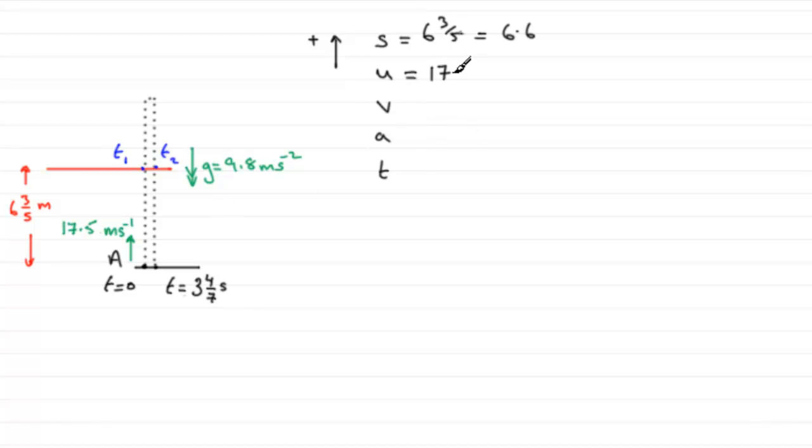v, the final velocity, we're not interested in that. At these particular times we don't really know what it is, so it's just got to be abandoned. Acceleration acts downwards, that's going to be minus 9.8 meters per second squared. And the time t, well that's what we're after, the time when it's 6.6 meters above A. What equation would we use? The one that we're going to use that leaves out v has got to be s equals ut plus a half at squared.